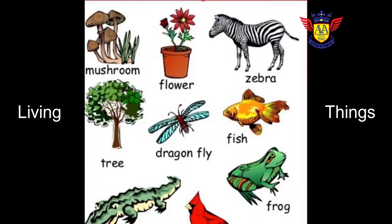Features of living things. Plants, boys, animals, girls, etc. — these all are living things.